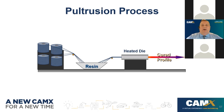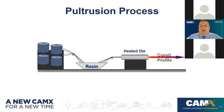Pultrusion is a continuous manufacturing process. Fiber reels feed into a creel, fibers are placed into a sorting card based on the desired fiber architecture, saturated in a resin bath, and then pulled through a heated die to produce a continuously cured profile. The resulting profile has a constant cross-section — think I-beams, channels, angles, or rods at very long lengths. The machine length can range from 30 to 80 feet depending on how many different fabrics and fibers are used.